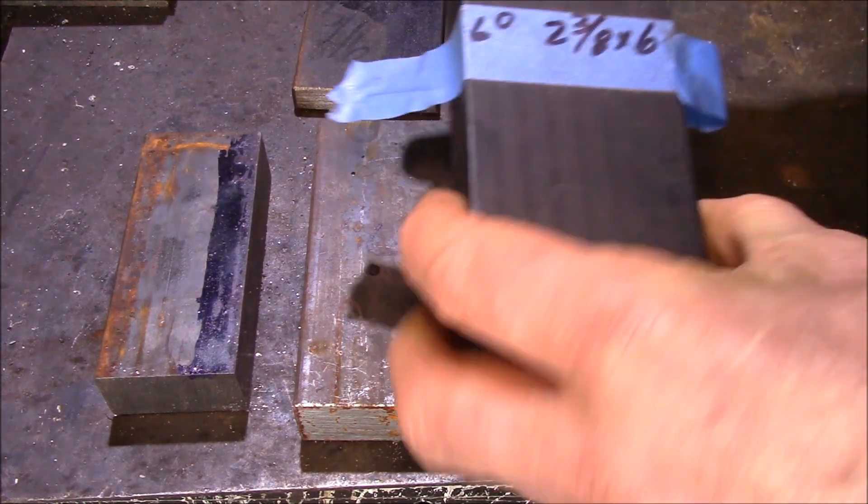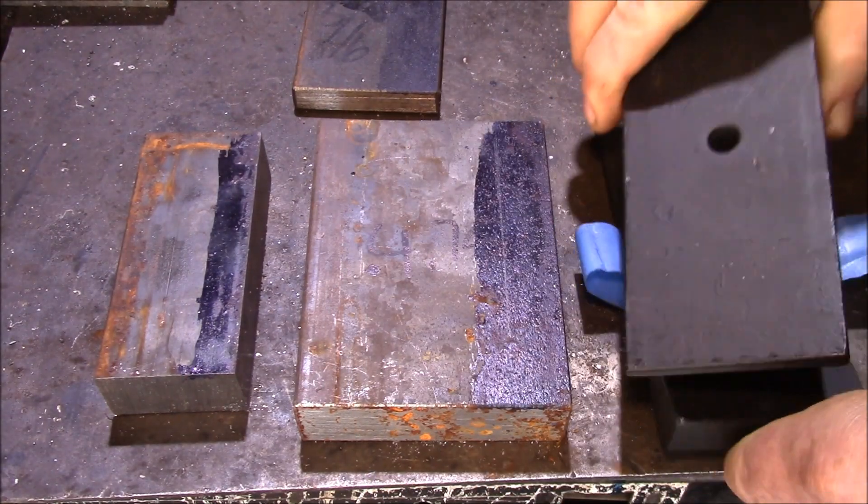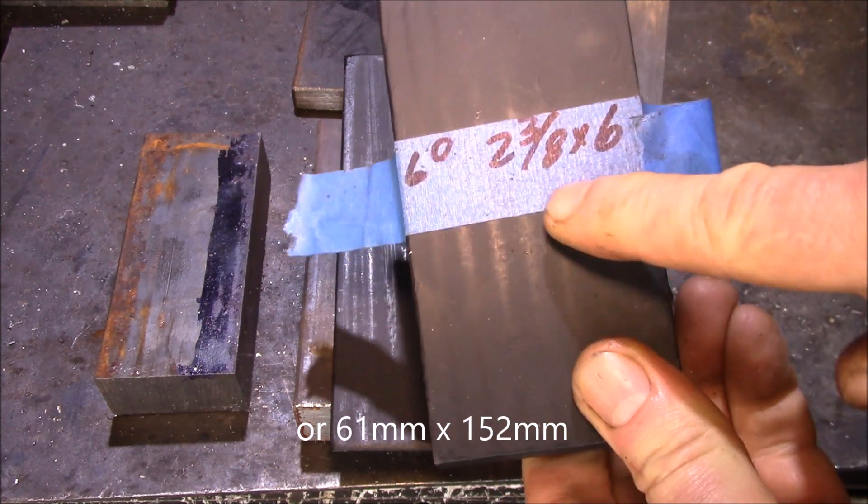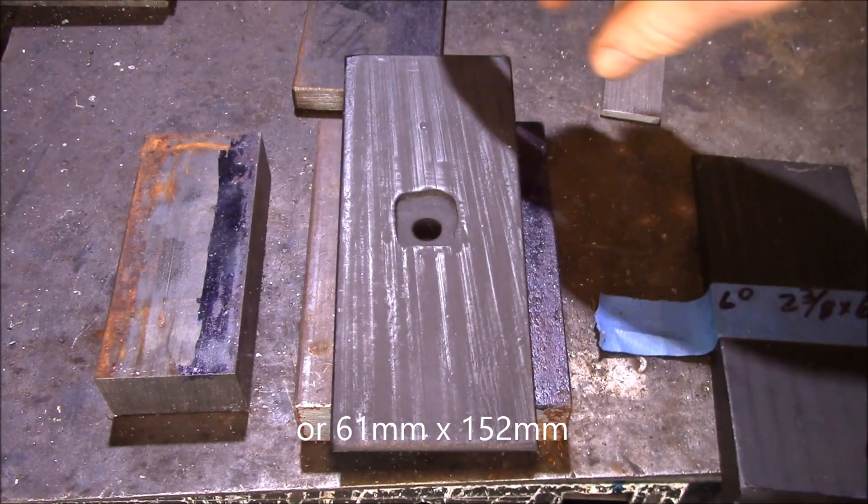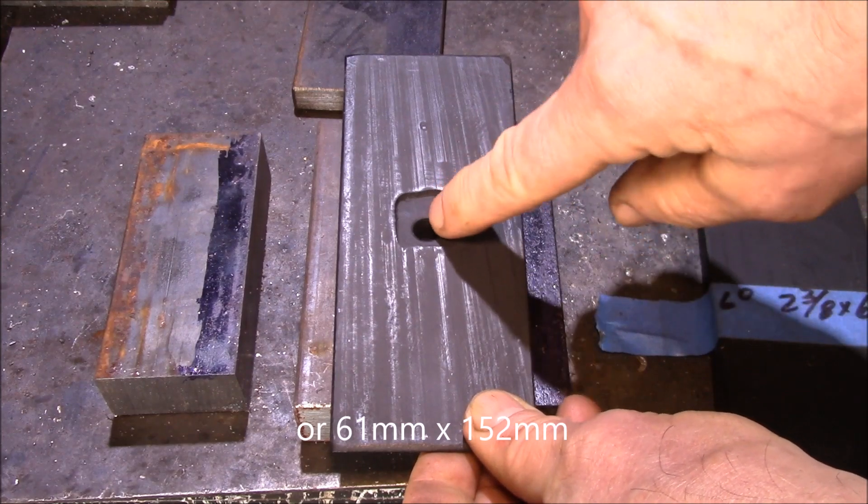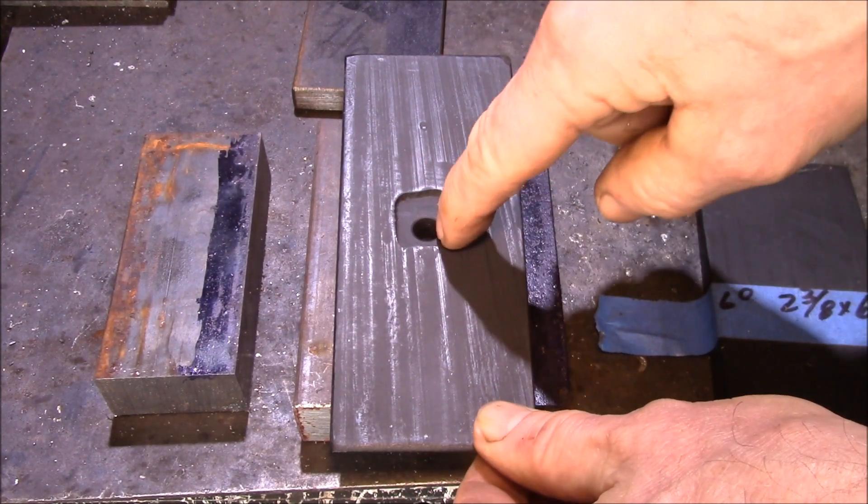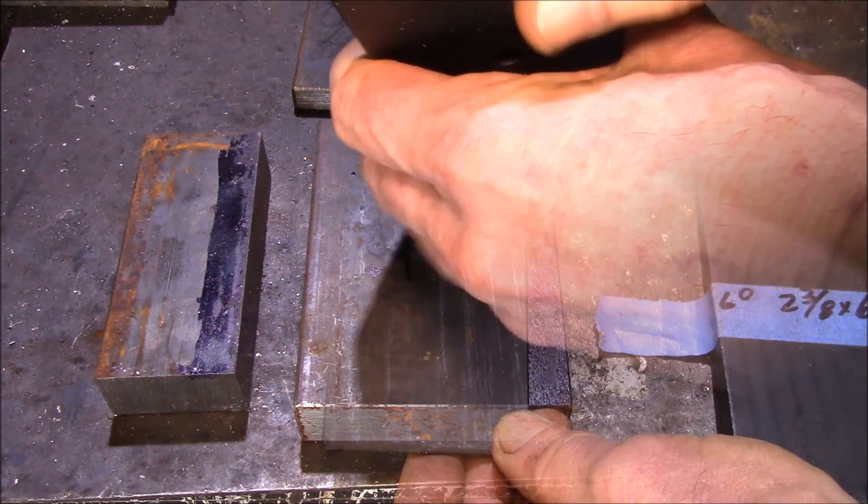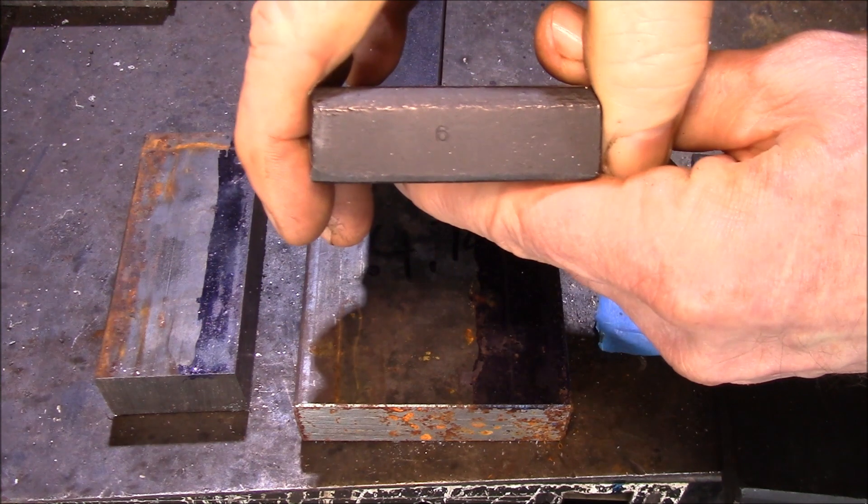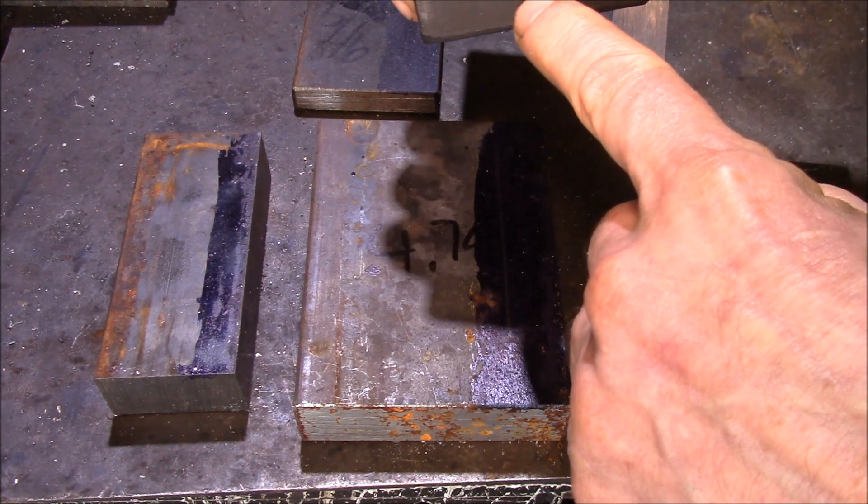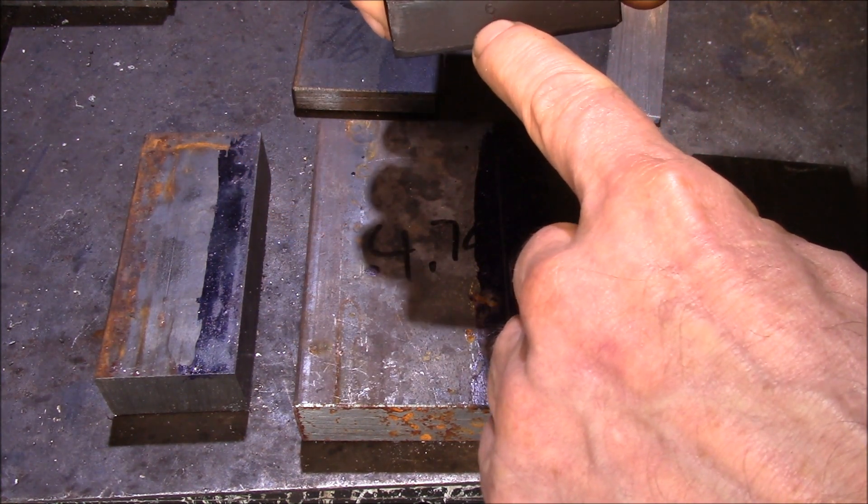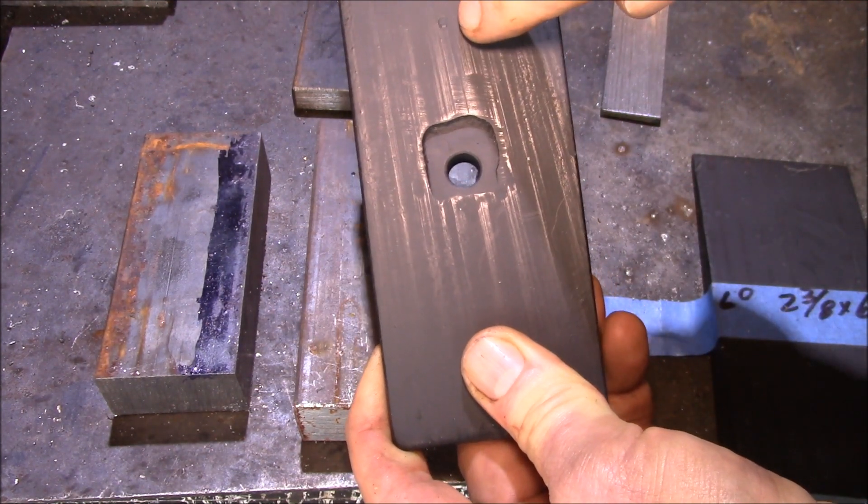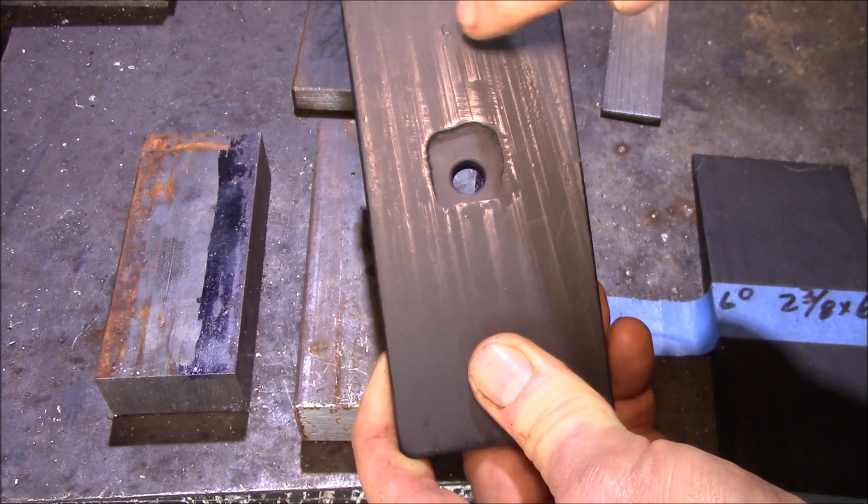And then just to show you what the finished shims look like. Here's one of our finished ones. This was a six degree, two and three eighths by six inches. So we've got the pocket here for the center bolt drilled in the middle. We have it stamped with the angle. I can stamp the angle on the end of the shim there. Once it's installed on the truck, you can look on the back face and see the angle. And then if you pull the springs off of the axle, you can see that the number stamped on that face too.